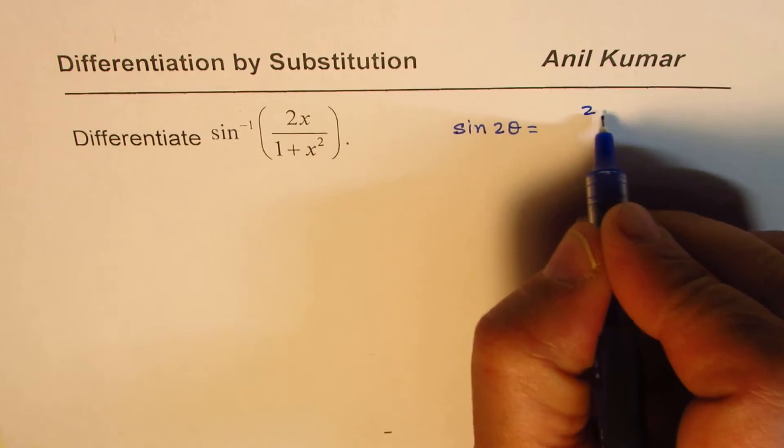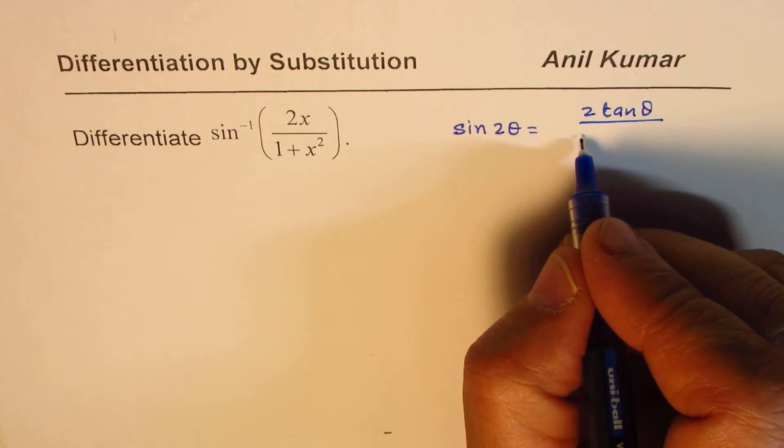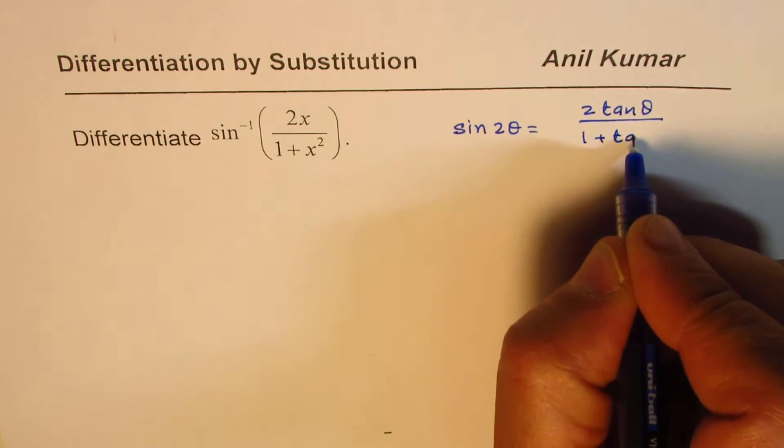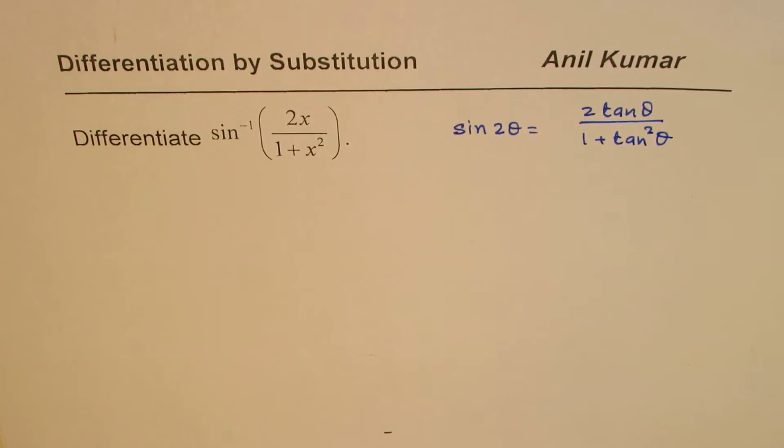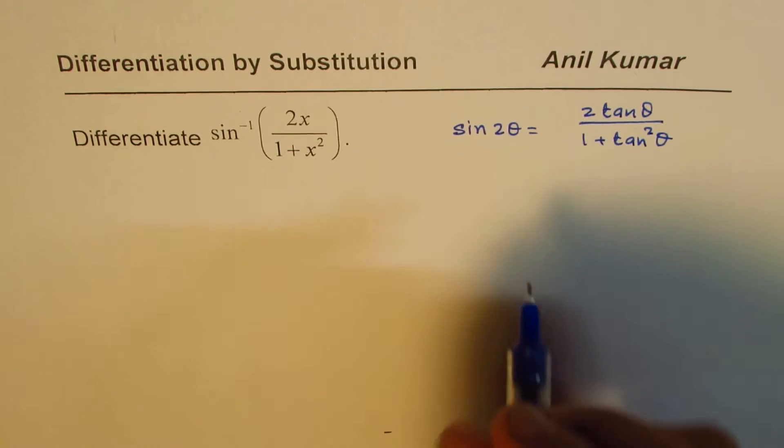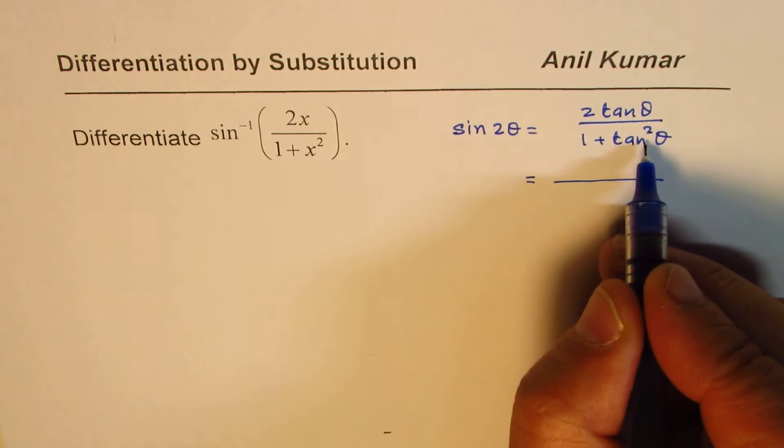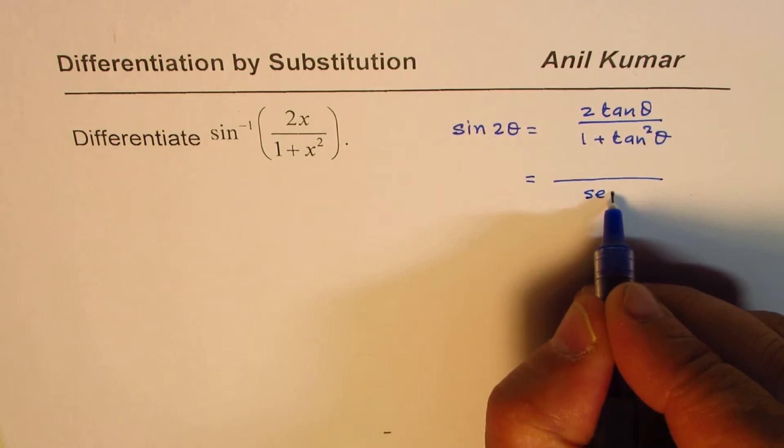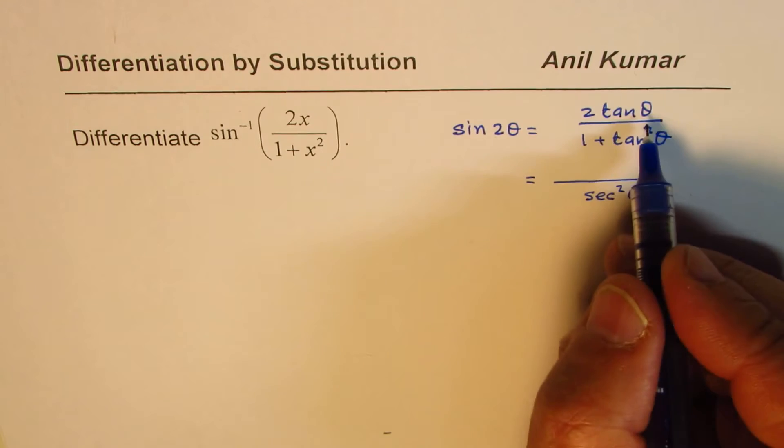Sine 2 theta is 2 tan theta divided by 1 plus tan square theta. This is a very popular identity. If you're out of touch, let me give you some derivation here. If you work on the right side, 1 plus tan square theta could be written as secant square theta, and we have tan theta here.